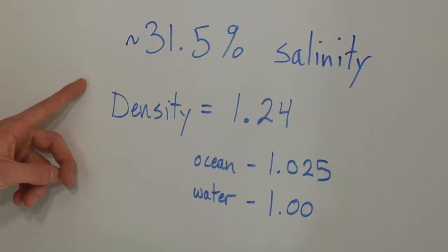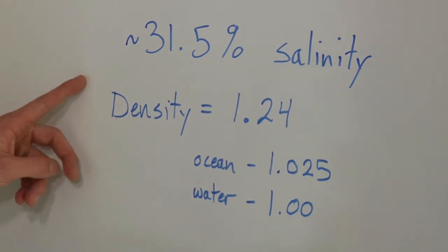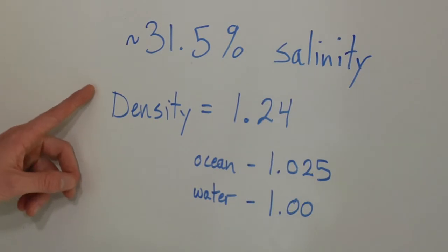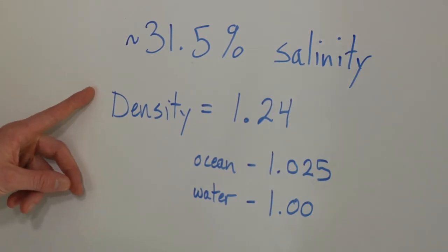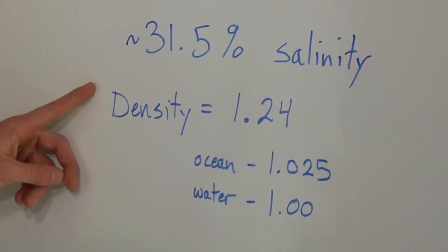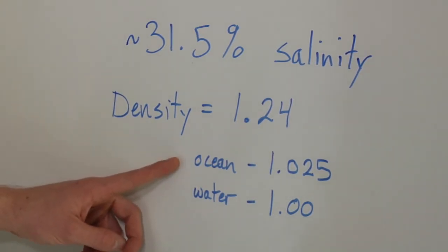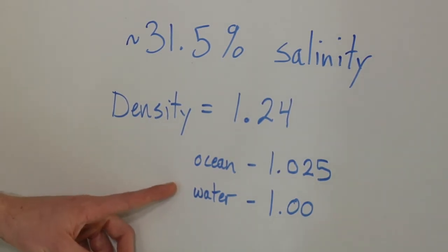The density of the Dead Sea is 1.24. This means the water in the Dead Sea is actually much more dense — or heavier — than regular water or even ocean water, simply because there's so much salt dissolved in it. In comparison, the density of oceanic water is 1.025, or approximately 1.03, and that of regular water is 1.00.